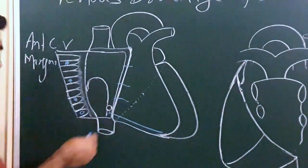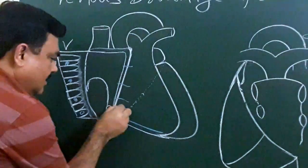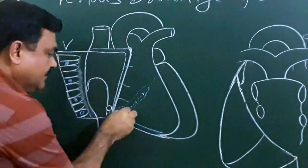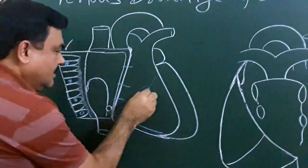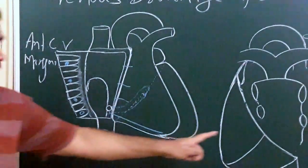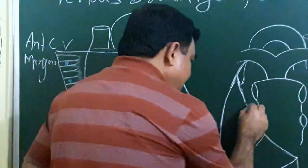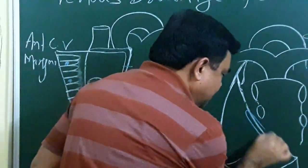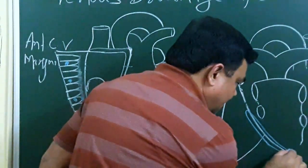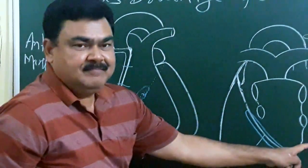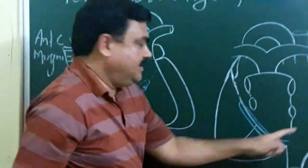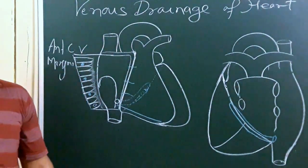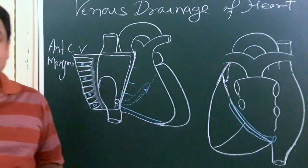The coronary sinus is present on the diaphragmatic surface. It is about 3 cm long. Here in this diagram you can see the position of the coronary sinus — this is the diaphragmatic surface. It opens into the right atrium. Here is the opening of the coronary sinus. This coronary sinus, which is about 3 cm in length, receives five tributaries.